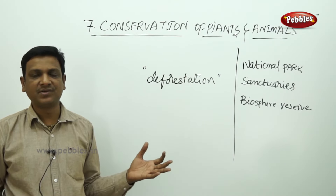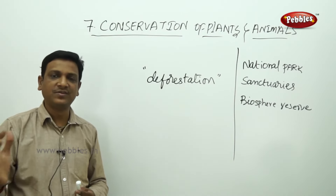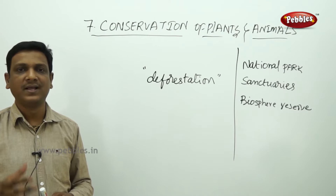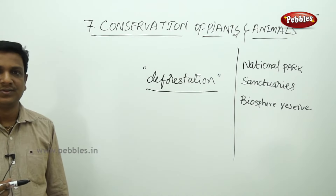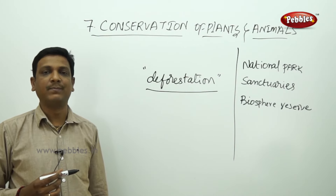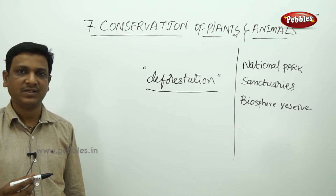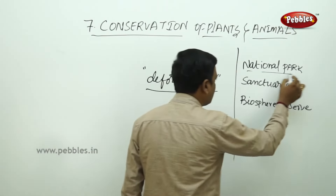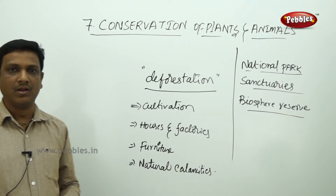Why does the government have to protect wildlife if there is a natural setup? It is because of human activities — in the view of development and progress, we are cutting down forests. That is deforestation. As the forests deplete, many plants and animals are becoming extinct and disappearing. To protect these endangered and endemic species, national parks, sanctuaries, and biosphere reserves are set up.